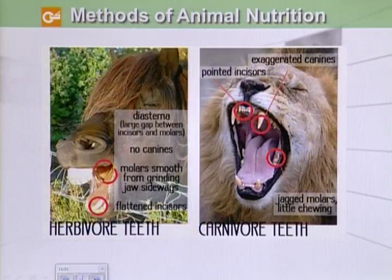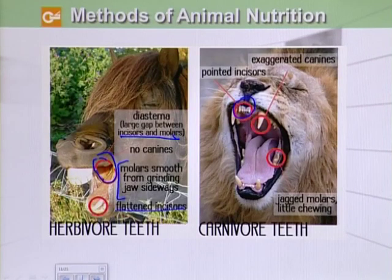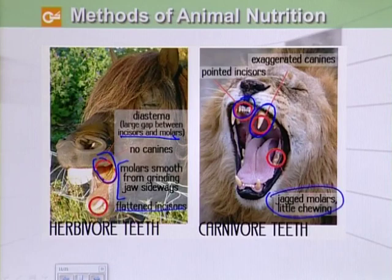Herbivore teeth have no canines, and there is a large gap between the incisors and molars. The molars are smooth for grinding, and they have flattened incisors. Carnivores, on the other hand, have pointed incisors and fully developed canines. They also have jagged molars because they undergo little chewing.